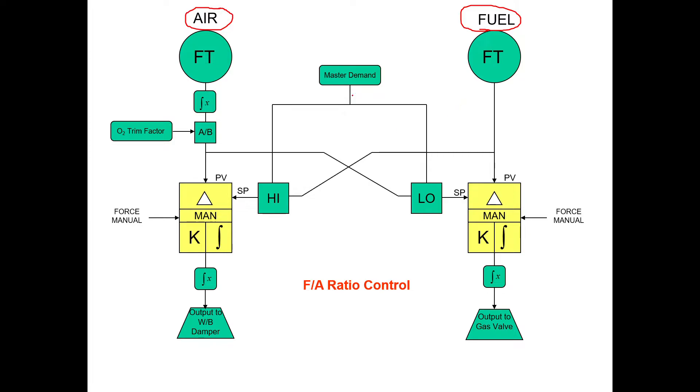And over here you have your fuel and this is its flow transmitter. Now we see the air actually comes into an F of X block, and the reason being is we take the air flow and we square root that value and send it to the controls.